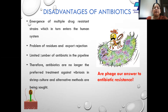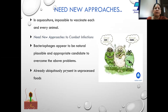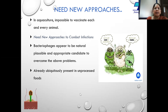We no longer can use antibiotics for the control of vibriosis or any other bacterial infection in shrimp aquaculture. In aquaculture it is impossible to vaccinate each and every animal, and the immune system is very poorly developed in shrimp. So we need newer approaches to combat infection. Bacteriophages appear to be the natural, plausible, and appropriate candidate to overcome these problems.